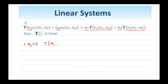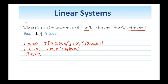From this equation it's clear that if alpha 2 is equal to zero, then the response of the system to alpha 1 times x1(n1, n2) is simply alpha 1 times the response of the system to x1. So if an image is multiplied by a scalar, I don't need to be concerned, I can process the image and then multiply the output by the scalar.